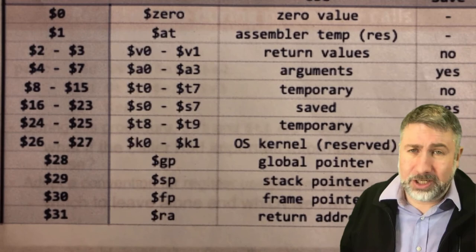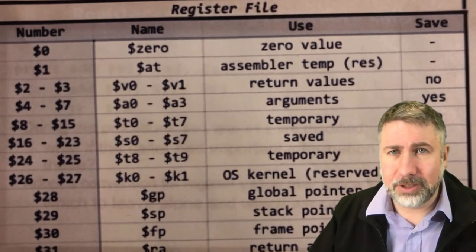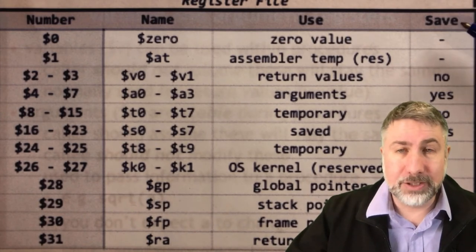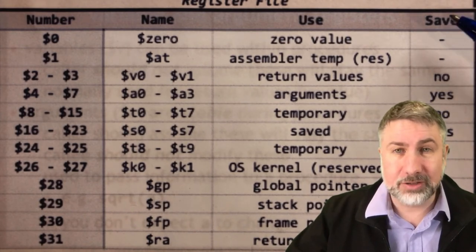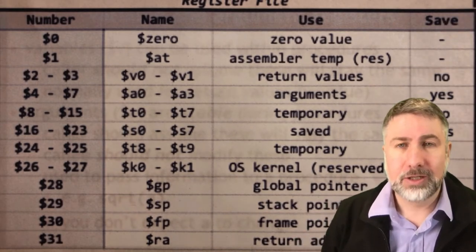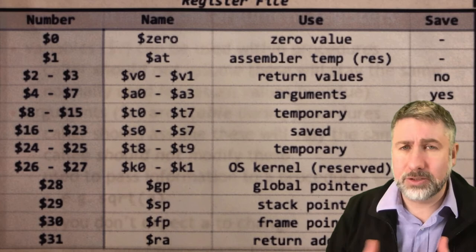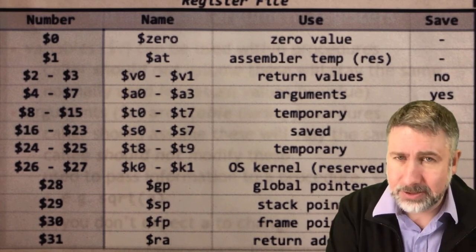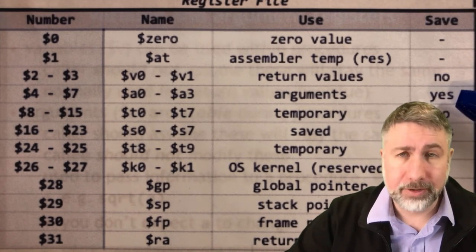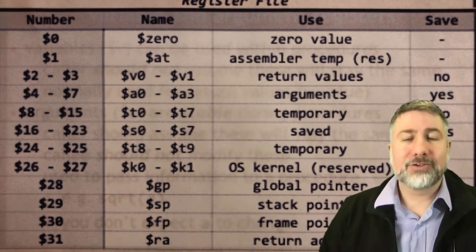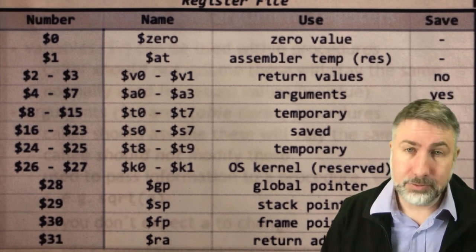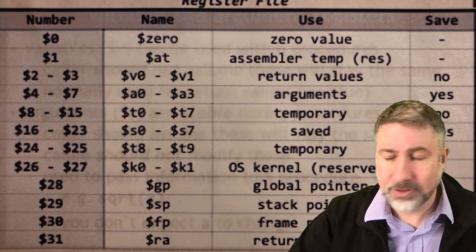We have a column that says 'save' and this is whether or not a value should be saved within the context of a procedure call. If you're writing a procedure and you need to modify the A registers, this column says you need to save them before you do that somewhere, so that when you're done the A registers don't change. The return values should change, so you don't need to save them — that's why that says no.